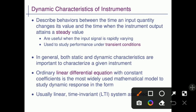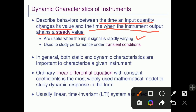Dynamic characteristics describe the behavior between the time an input quantity changes its value and the time when the instrument output attains a steady value. These are useful when the input signal is rapidly varying; it is used to study performance under transient conditions. Transient conditions means when input is varying with respect to time, that performance can also be studied.